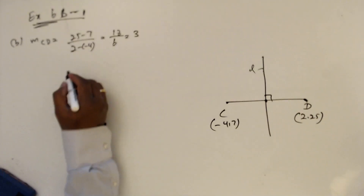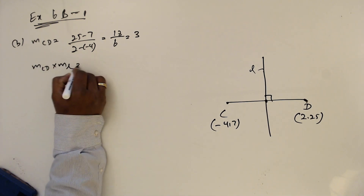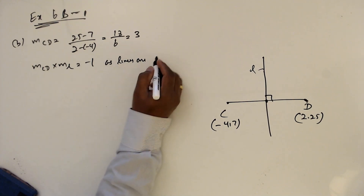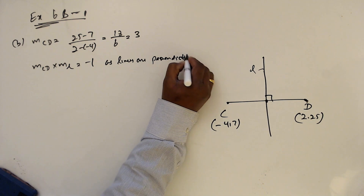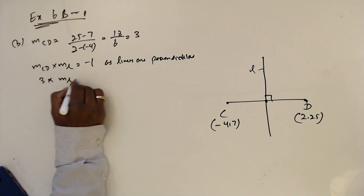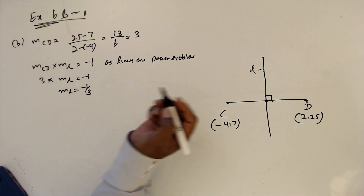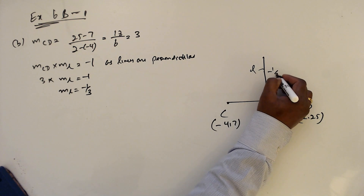That gives 18 over 6, which is 3. Now we know MCD times ML equals minus 1 since lines are perpendicular. So 3 times ML equals minus 1, giving ML equals minus one-third.